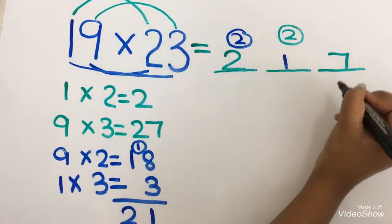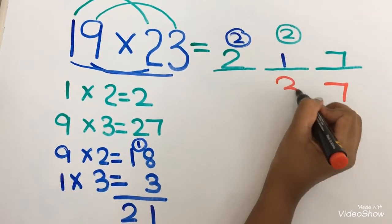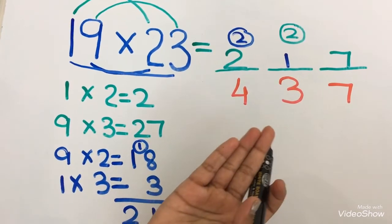Now let's add it. So 7, 2 plus 1 equals to 3. And 2 plus 2 equals to 4. The answer is 437.